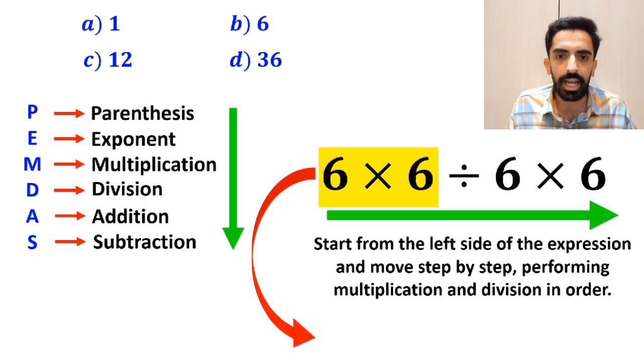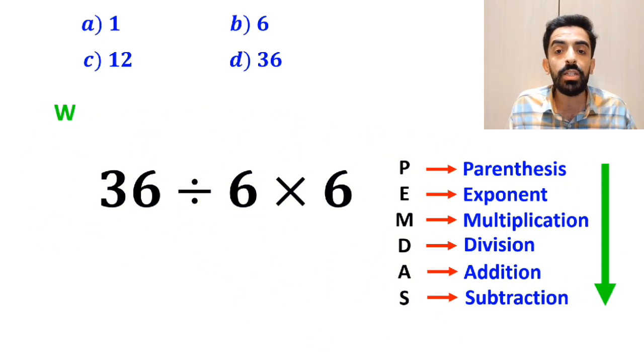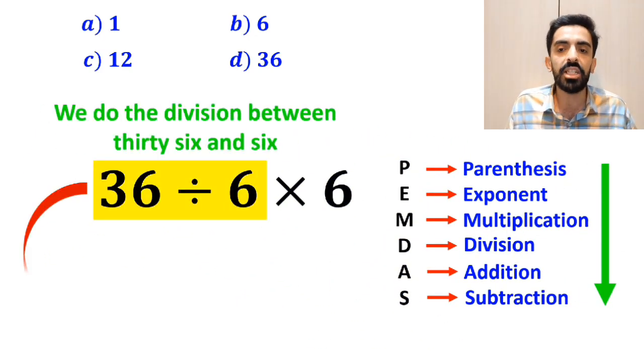And instead of the original expression, we can write 36 divided by 6 then times 6. In the next step, we do the division between 36 and 6, which simplifies the expression to 6 times 6.